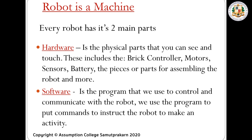Every robot has two main parts: we have the hardware and we have the software. First, let's talk about hardware. Hardware is the physical parts that you can see and touch. This includes the brick controller, the motors, sensors, battery, and the pieces or parts for assembling the robot.